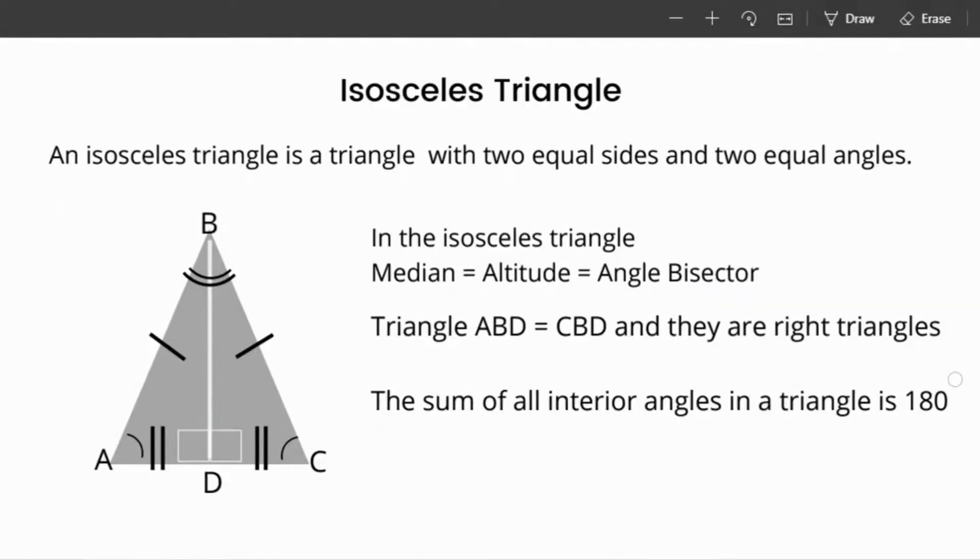An isosceles triangle is a triangle with two equal sides and two equal angles. One of the sides and one of the angles are not the same as the other two. In the isosceles triangle, median, altitude, and angle bisector are all the same line if they come out of the vertex that is opposite the side that is not one of the same sides. Triangle ABD equals triangle CBD in this case, and they are also right angle triangles.